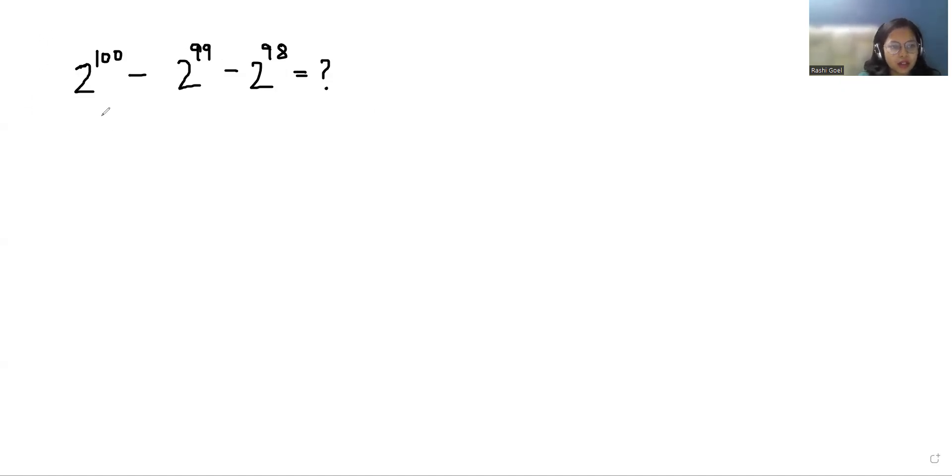So we can write 2^100 as 2^(98+2), similarly 2^99 as 2^(98+1), minus 2^98. Now according to the exponent rule,